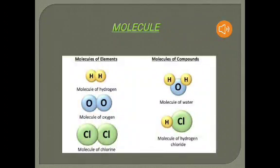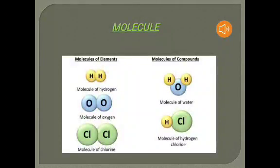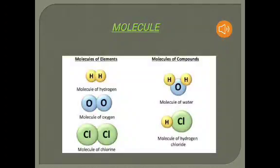A molecule of a compound is formed from different kinds of atoms. For example, when two hydrogen atoms combine with one oxygen atom, they make a water molecule. When one atom of hydrogen combines with one atom of chlorine, it forms hydrochloric acid, or HCl. That is a molecule of a compound.